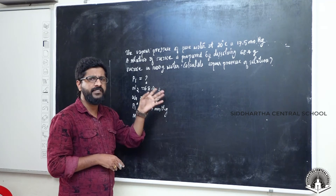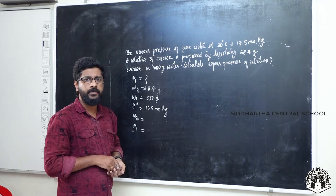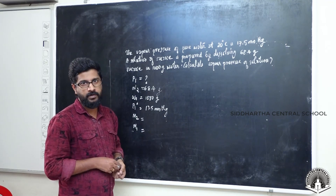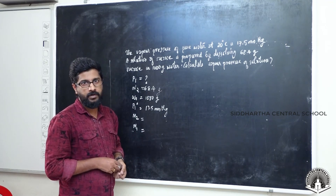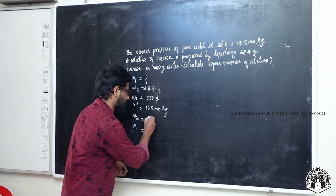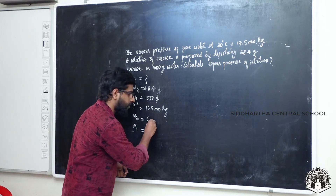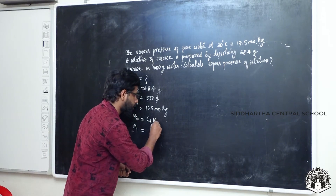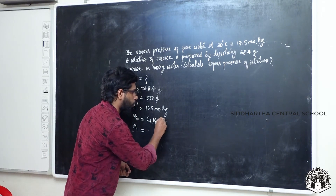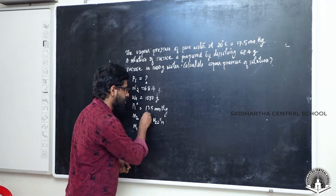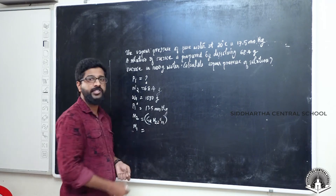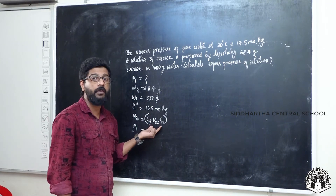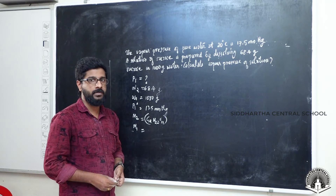What is the solute here? It is sucrose. What is the chemical formula of sucrose? It is C12H22O11 — that is the molecular formula of sucrose.